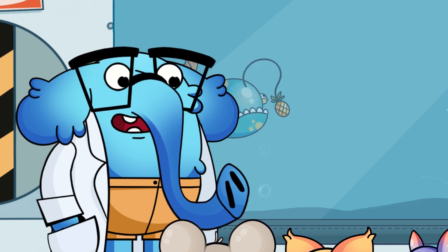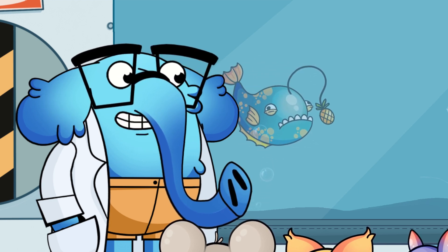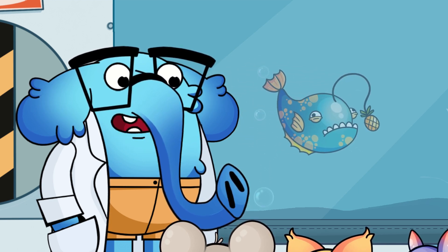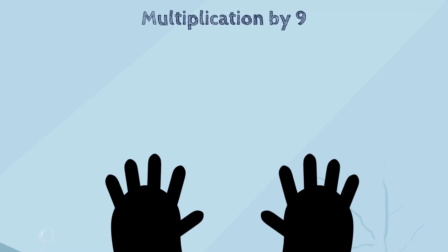Now, let's look at another way to multiply by nine — I call it the magic hands trick. To use this trick, put your hands straight out in front of you, don't bend your fingers. Let's count your fingers from one through ten, starting from the left hand: one, two, three, four, five, and then six, seven, eight, nine, ten on the right hand.